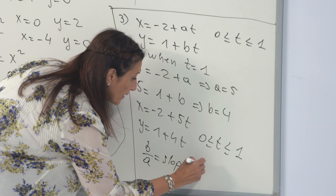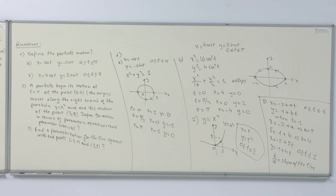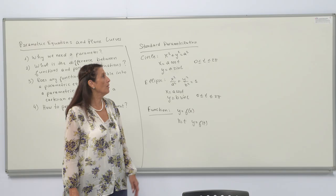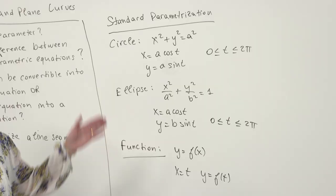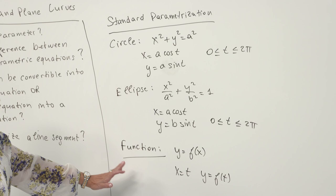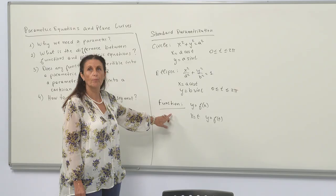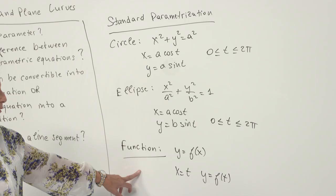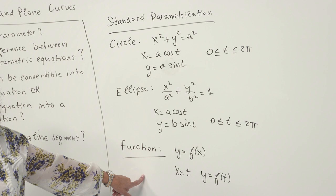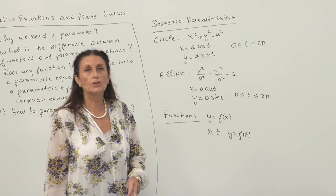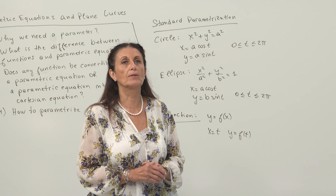I tried to give you some ideas and notions about parametric equations and plane curves. We covered the standard parametrization of circles and ellipses, an example with a parabola, and parametrization of a line segment. This is just a glimpse of the subject — if you want to learn more, you should read further. Thank you for listening.